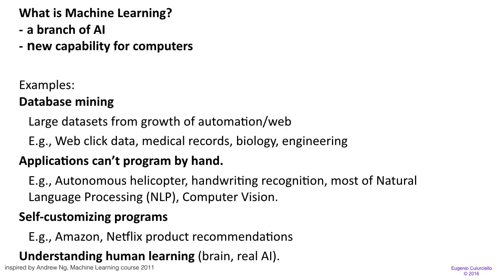Then there are applications that cannot be programmed by hand, like has been done for computers up to now. For example, autonomous helicopters or self-driving cars and so forth. And a lot of computer vision and also understanding of speech. There are also self-customizing programs such as Amazon and Netflix that can recommend products based on what they know about you.